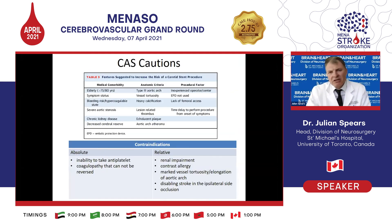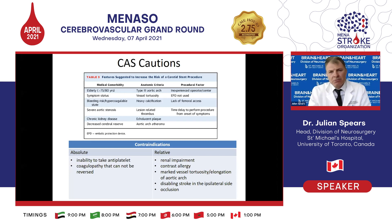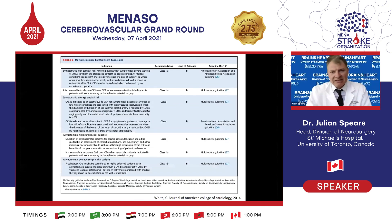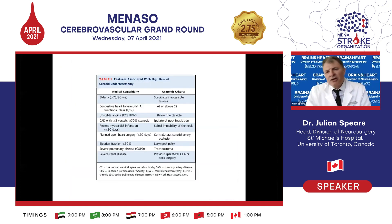Special considerations when considering angioplasty and stent include the elderly population — a correlate for tortuosity, high atheroma burden, and various medical conditions — type 3 arch anatomy, tortuosity, and calcification. If there is thrombus at the site of the plaque, that is dangerous, and we heparinize those patients until it is completely resolved. The last consideration is operator experience, which is critical for both endarterectomy and angioplasty and stenting.